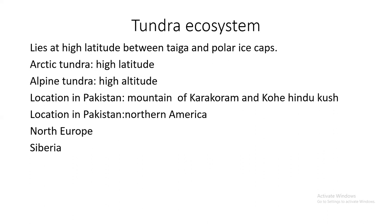If tundra is at high latitude, it is called arctic tundra. If it is at high altitude, it is called alpine tundra. In Pakistan, the Karakoram and Hindu Kush are examples. Around the world, tundra is found in North America, South America, and North Europe.